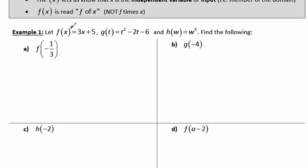So let's look at some examples. I'm going to look at f of x equals 3x plus 5, and g of t—this is another function, this one's named g, and t is the independent variable—it's t squared minus 2t minus 6. h of w, our third function, is w cubed. I want to find the following.